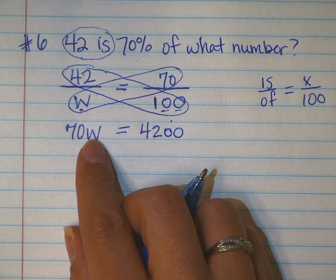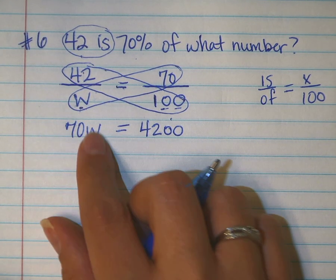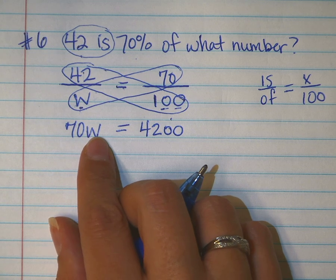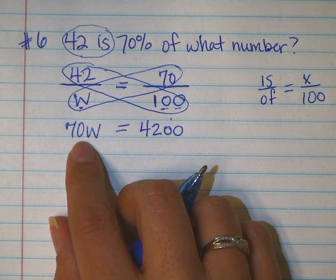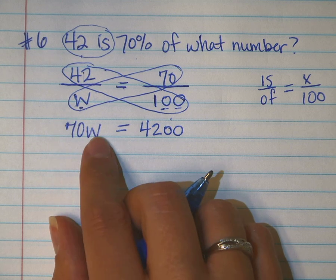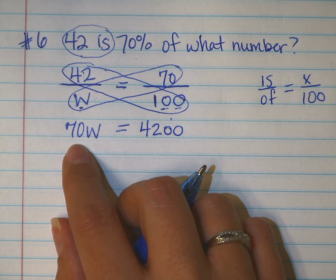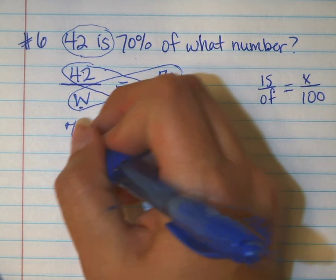In order to undo or do the opposite of what I see, I need to figure out what's happening between the 70 and the W. Are they adding, are they subtracting, are they multiplying or dividing? It's multiplication. What's opposite of multiplication? I need to divide.